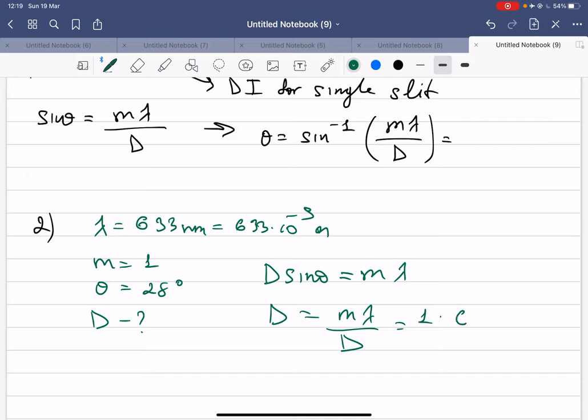So m is equal to 1, lambda is equal 633 times 10 to the power of minus 9, and here we have sine theta. So sine 28 degrees. Okay.